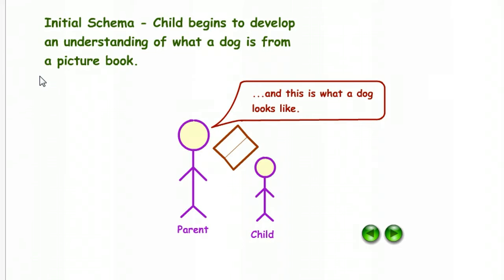A schema represents one's understanding of how something works or what something is. So here we have an initial schema. A child begins to develop an understanding of what a dog is from a picture book, and the parent reads, and this is what a dog looks like.